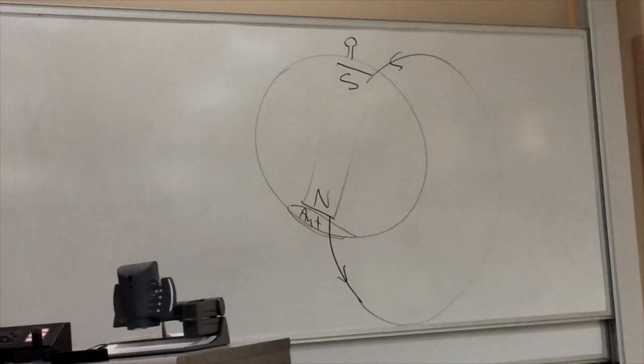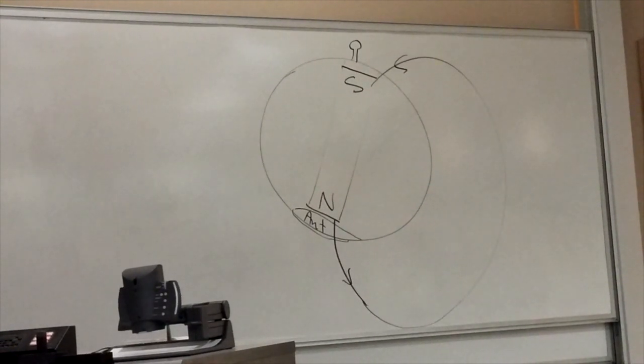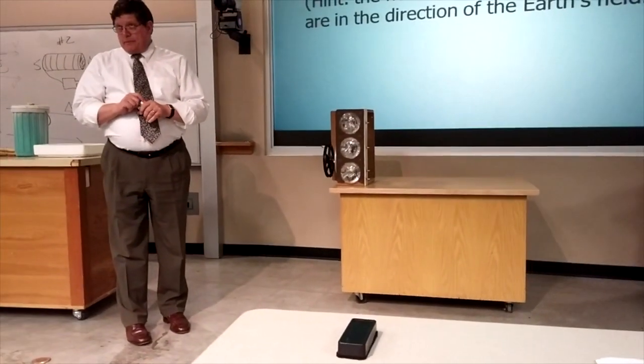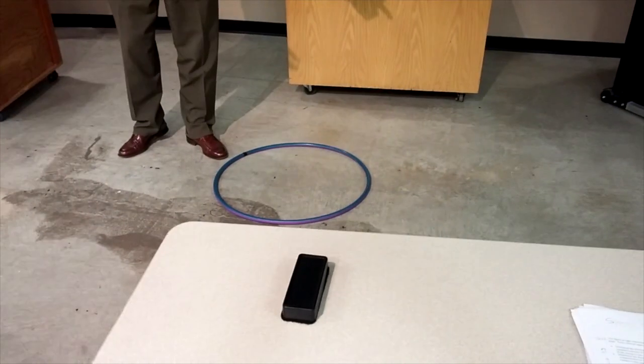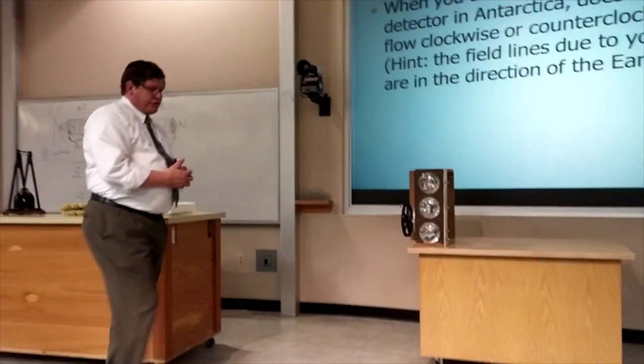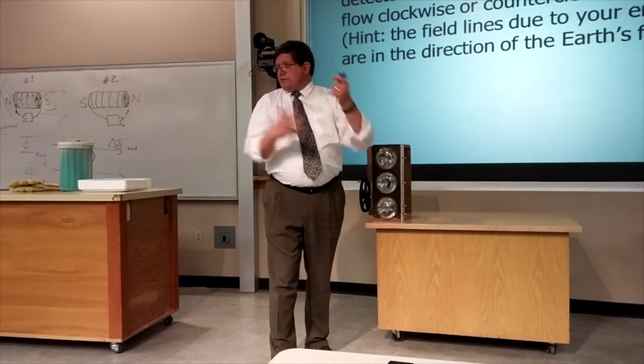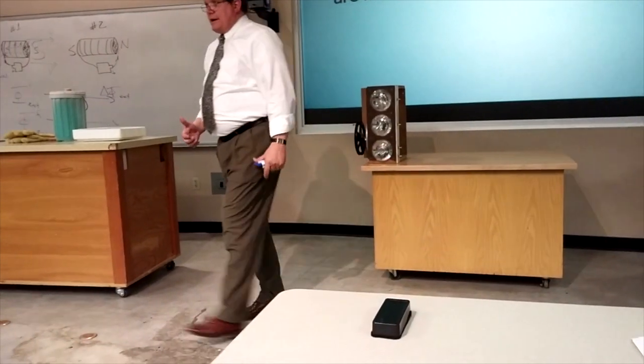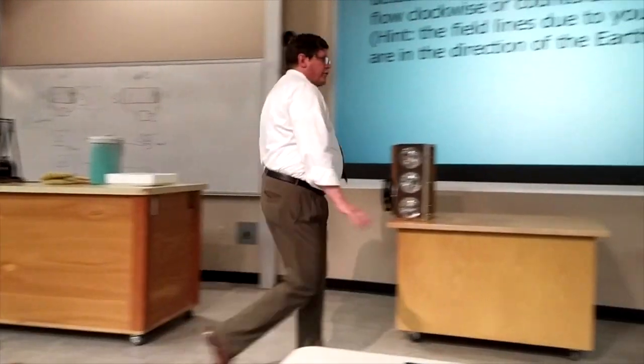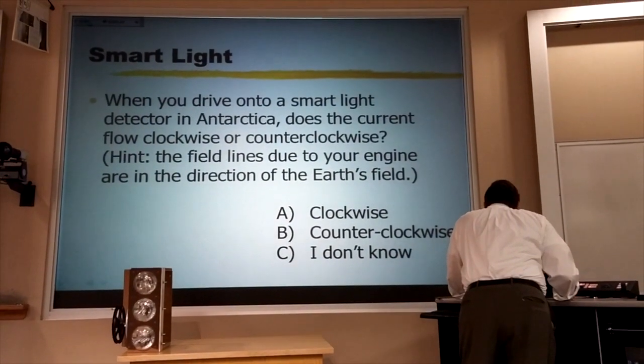Let's get ourselves a smart light. There's a smart light. That's the coil that's in the pavement. As you drive your car over that coil, you're taking the number of field lines through that loop from maybe three coming up to 53 coming up, because your engine's magnetic field is lined up with the Earth's magnetic field. So the question is, what direction would the induced current flow, clockwise, counterclockwise, or I don't know?